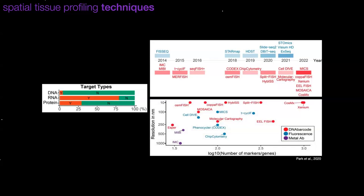All these different techniques — detecting either proteins or transcripts — differ a lot in the resolution they allow in the spatial dimension, but also in the plexity we can obtain from them, and therefore in the biological breadth we can read. It's very important to understand which technique is best suited to answer a particular biological question, because they are really complementary and not similarly applicable.